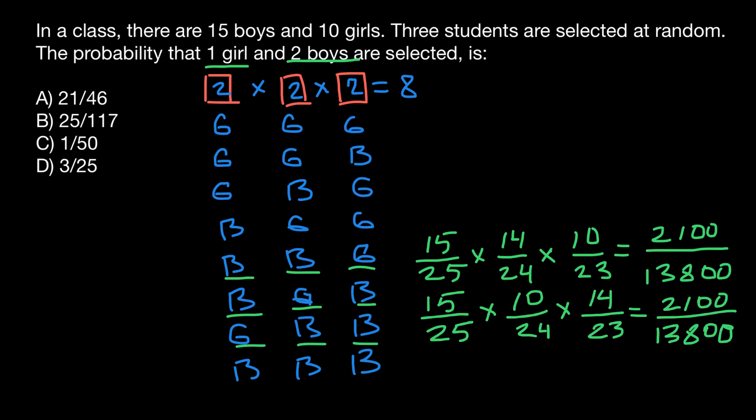And again, this is our calculations. And the last time, we also would get the same number, but I still want to show you. So we choose the girl first, so we are choosing out of 25 people, and we have 10 girls to choose from. So this is going to be our probability that we choose this girl.